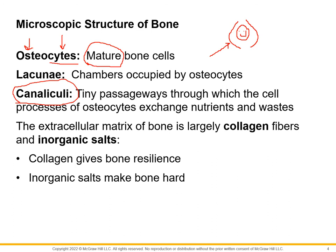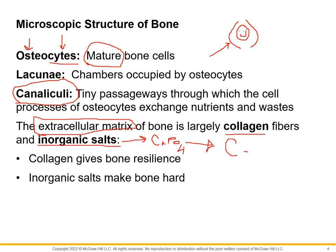The bone itself is made up of a lot of extracellular matrix — the ground substance that makes up the major parts of connective tissue. The extracellular matrix is mainly collagen and inorganic salts. When we talk about inorganic salts, we're talking about calcium phosphate, but more importantly just remember calcium. Collagen gives bone its resilience — its tensile strength — making it harder to break.